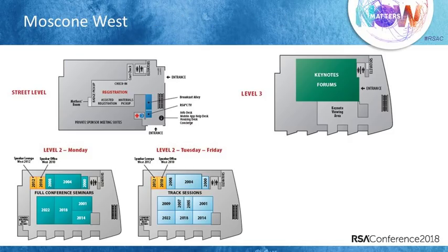Looking over at Moscone West: at street level, there is registration — the only place you can register for RSA Conference this year. We also have a coat check, materials pick-up for full conference attendees, their conference bag and other materials, broadcast alley, RSAC TV, and a number of help desks including an information desk, a mobile app help desk, a housing desk, and a concierge service.